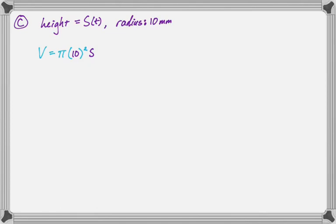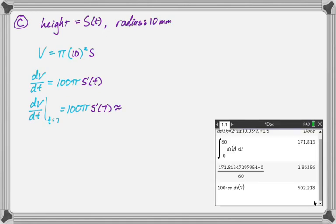We need to find dV/dT when T is equal to 7. That's the question. So dV/dT is going to be 100 pi times the derivative of S with respect to T, so S prime of T. And they gave us S prime of T. So we're going to try to find dV/dT when T is equal to 7. So that'll be 100 pi S prime of 7. Calculator question, so use your calculator for this.